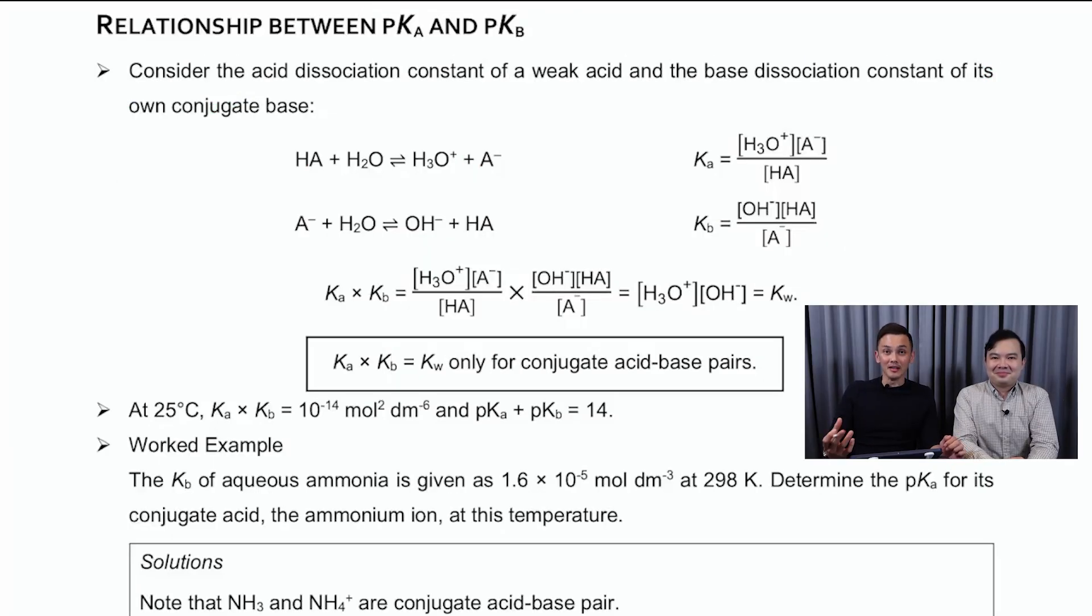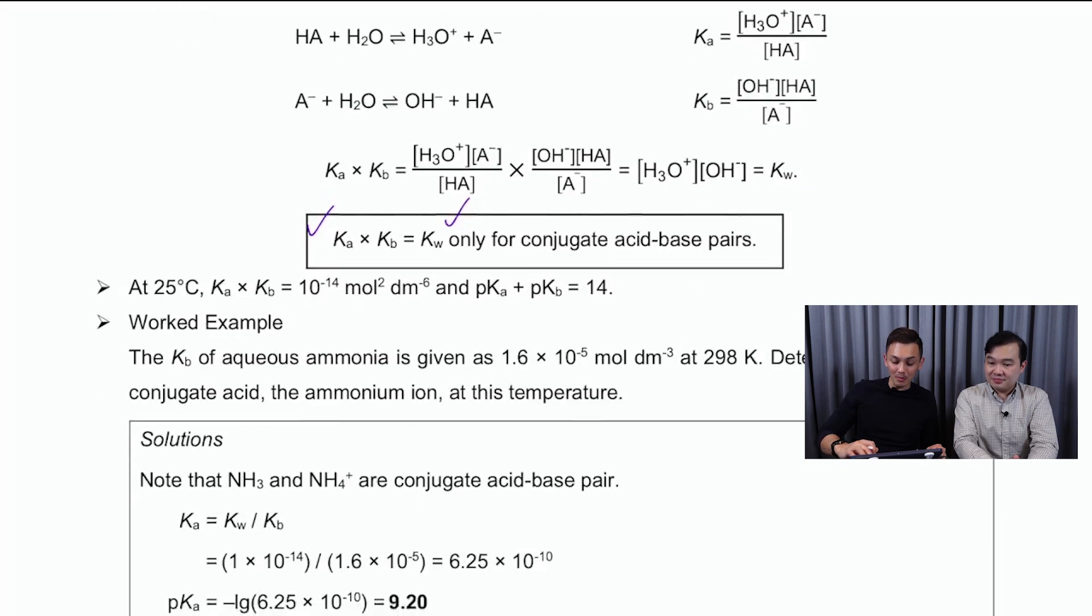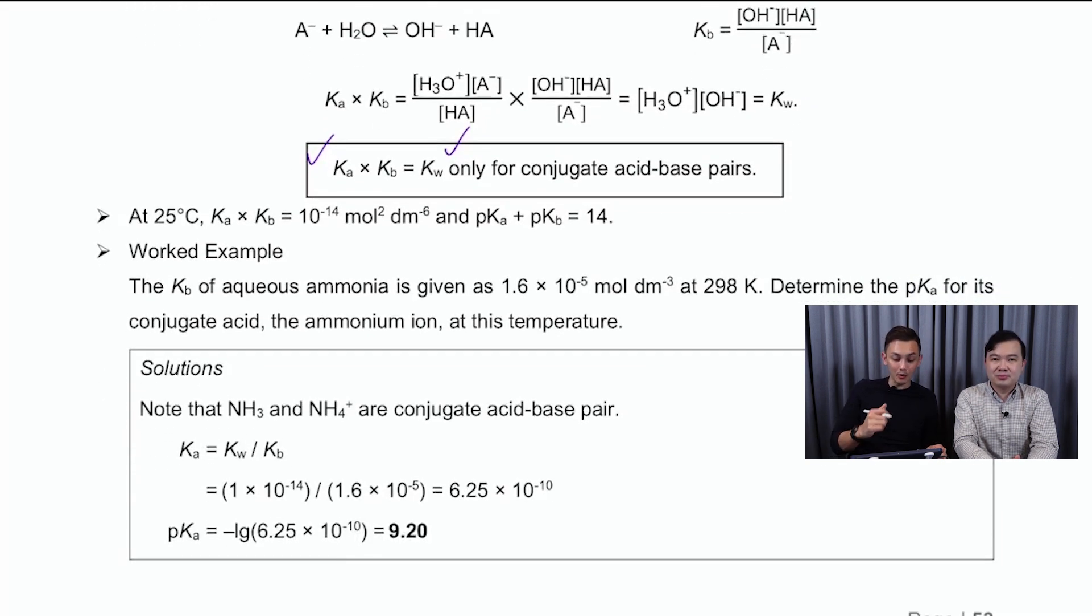A concept that's linked to the concept of Kw, if you guys remember, there was a formula that we did last week, which says that Ka times Kb is equals to Kw. I'm not going to re-derive the definition or how you get this formula, but I'm going to work on an example for you just to illustrate how we actually use this expression. If you take a look below, this was one question that we did last week. The question was giving us the Kb value of aqueous ammonia. It's going to be this value. So the question is what is going to be the pKa for the conjugate acid, the ammonium ion.